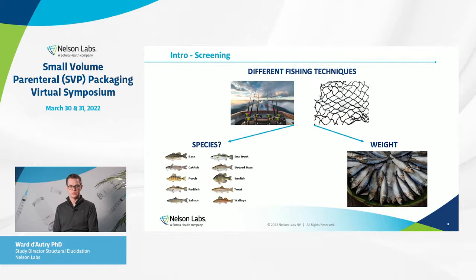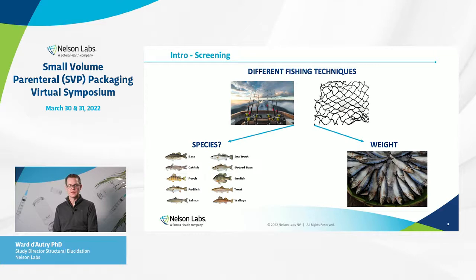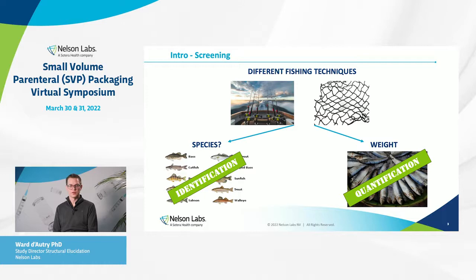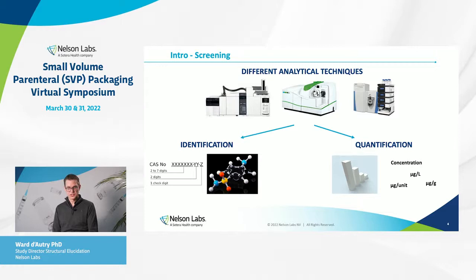I want to compare it with a lake where you want to know the species and the amount of each species of fish. For that you need different fishing techniques — a line or a large fishing net. This represents the process of identification of the different species present, and then for each species, how much. That is the process of identification on one hand and quantification on the other, and we do the same for extractables and leachables in a screening process, using different analytical techniques for discovery, identification, and semi-quantification.